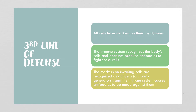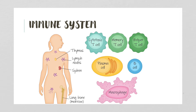The third line of defense is much more specific and takes longer to mount an attack. All cells have markers on their membrane. The immune system recognizes your own cells and doesn't produce antibodies against them — though in autoimmune disorders the immune system gets confused. Markers on invading cells are recognized as antigens, or antibody generators, and the immune system causes antibodies to be made against them. Immune cells involved include macrophages, B cells, helper T cells, memory T cells, cytotoxic T cells, and plasma cells.